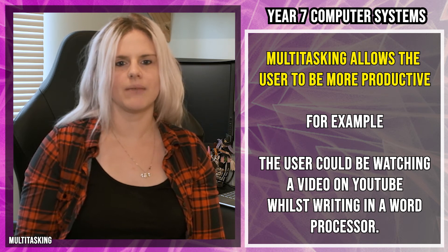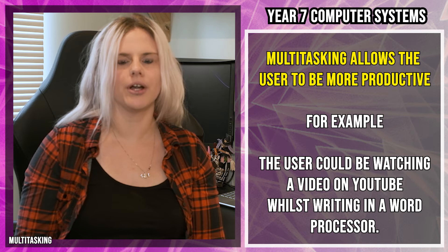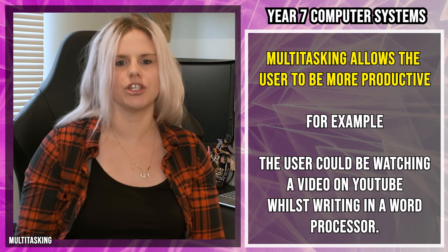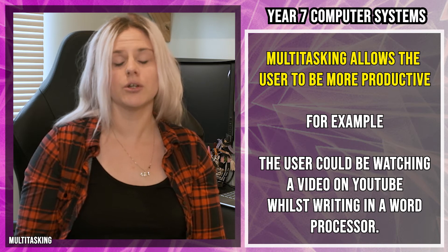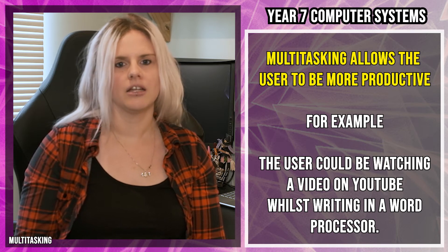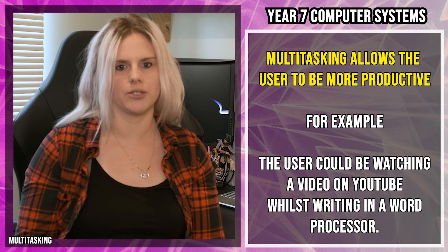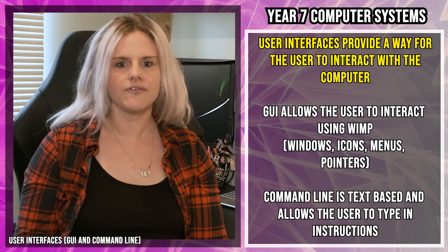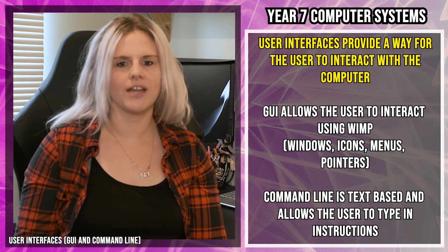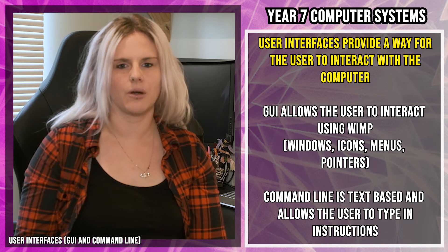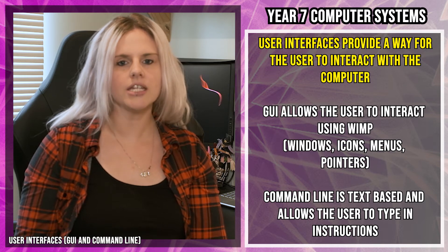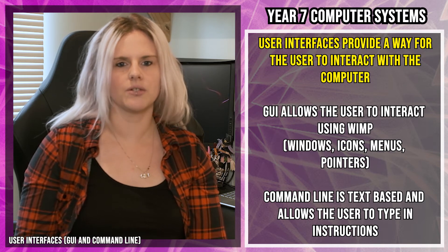What's really important is that both activities have to be happening on the same computer. For example, if you write 'doing my homework whilst watching YouTube,' you could be doing your homework on paper. It needs to be really clear that both activities are happening on the same computer. User interfaces provide the user with a way of interacting with the computer — so interacting means clicking on it and using it.